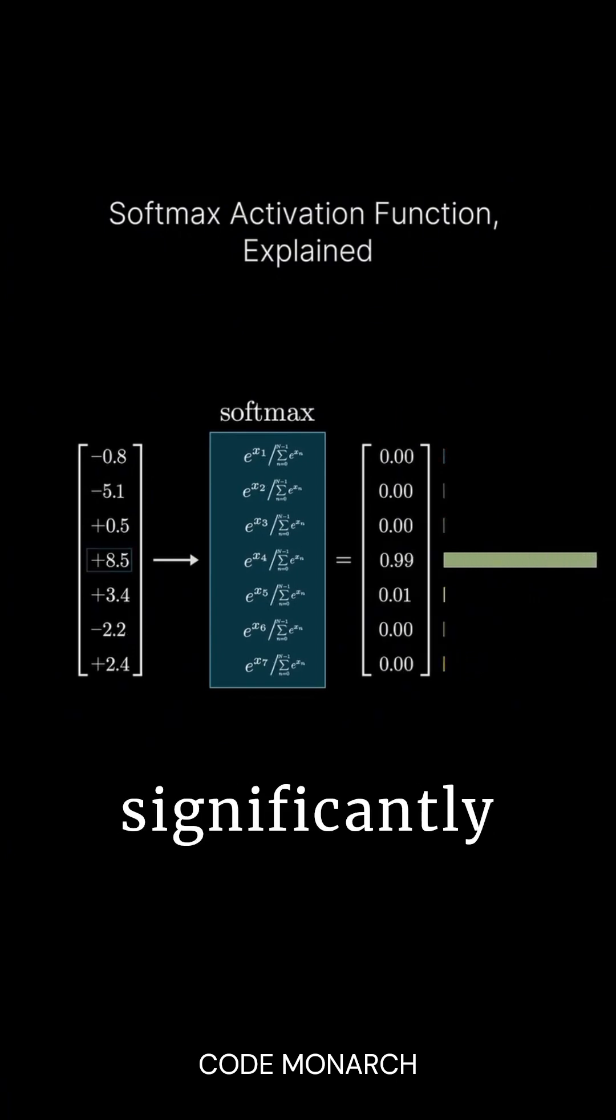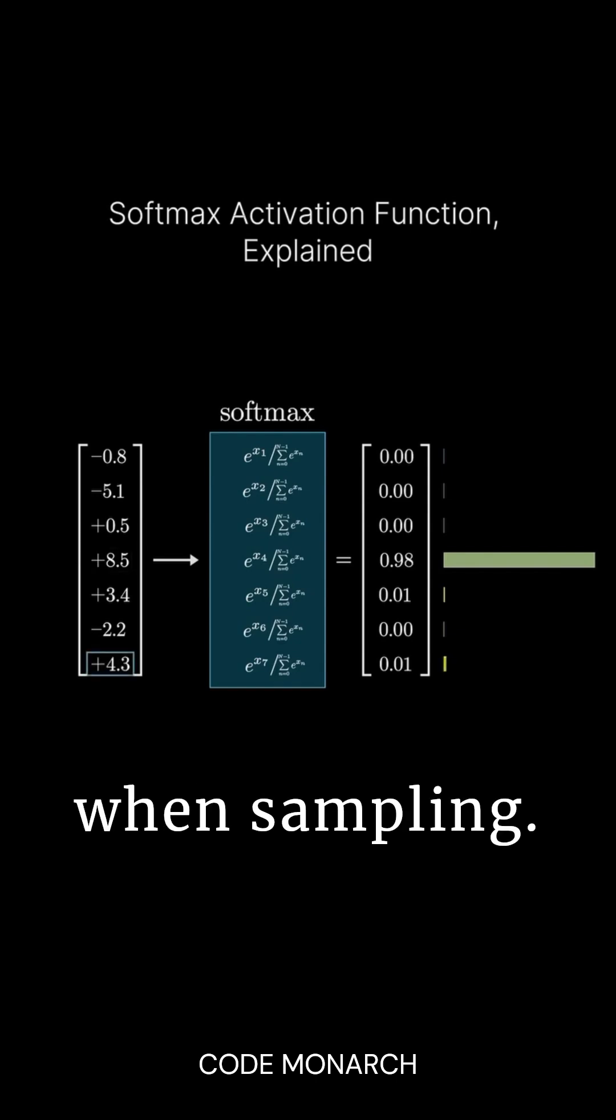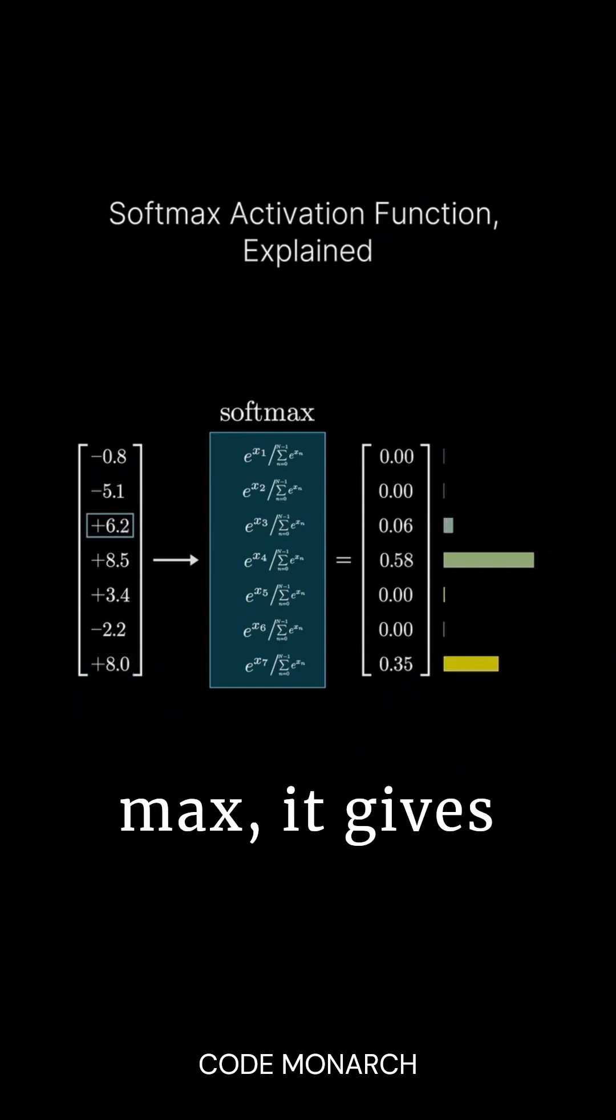If one number is significantly larger than the others, its corresponding probability will dominate the distribution, making it likely that you'll pick that value when sampling. However, softmax isn't just about choosing the max, it gives meaningful weight to other values as well when they're close in size.